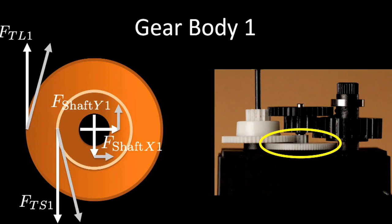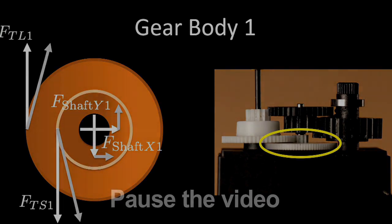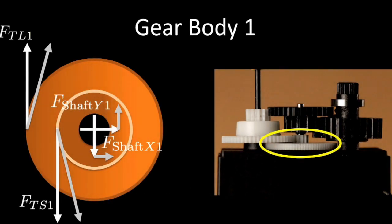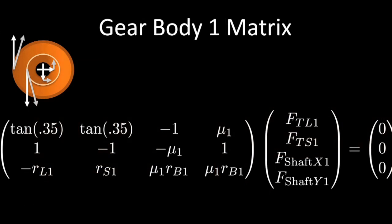Now it's your turn. Take a moment to write a matrix that models the force and torque balance on the first rigid body gear in the gear train. Pause the video here. This matrix is completely analogous to the matrices we obtained for the second and third gear bodies.